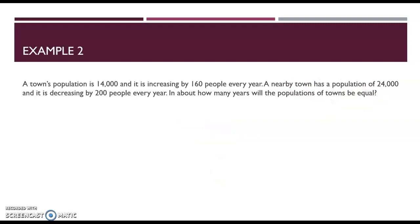Alright. So here's a word problem. We have a town's population is 14,000 and it's increasing. So increasing would be adding by 160 people every year. So kind of like per, right? Remember we talked about multiplication can be shown in the words per, but also every or even for every would be ways that we can show multiplication.